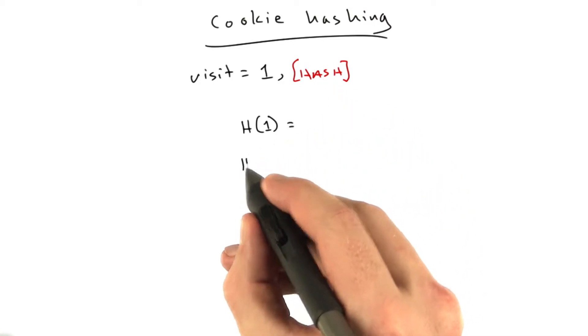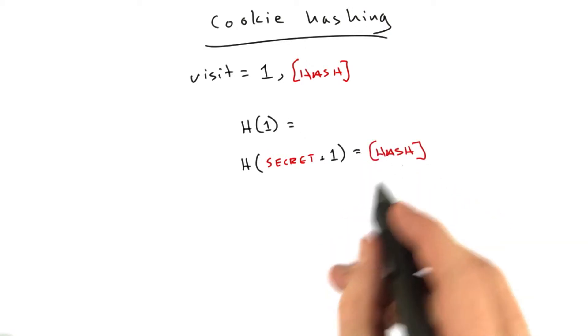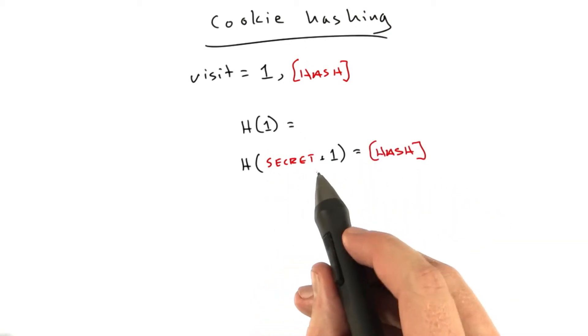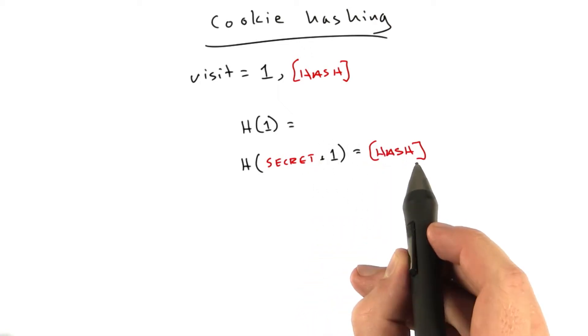what we want to do is we want to hash a secret string plus the number 1 into a hash. So, as long as this secret stays secret, a would-be attacker, even if they know our algorithm, won't be able to forge a hash.